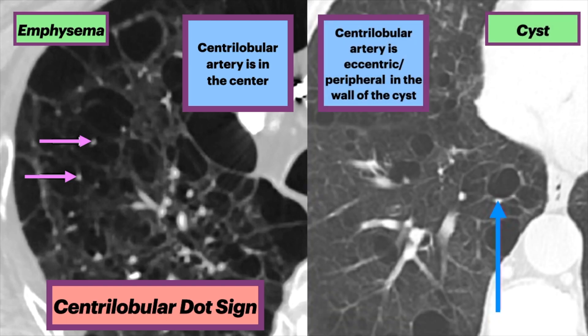Distinguished from the cyst on the right, note how the centrolobular artery is eccentric or peripheral in the wall of the cyst. Cysts also have thin, but sometimes perceptible walls, unlike emphysema.